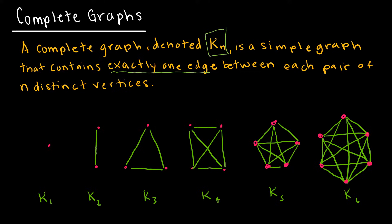I've drawn some of these out for you. This is K1, which has just one vertex with no edges because we can't draw a loop or it would not be a simple graph anymore.